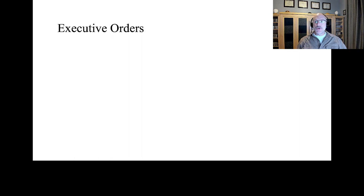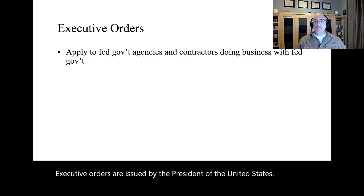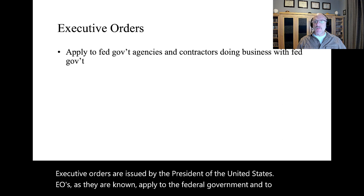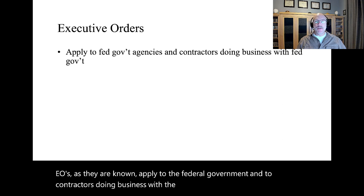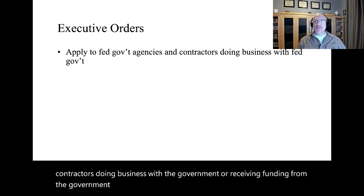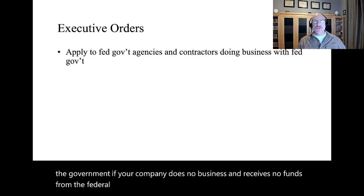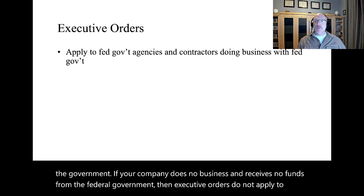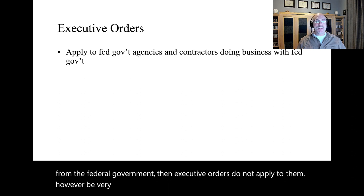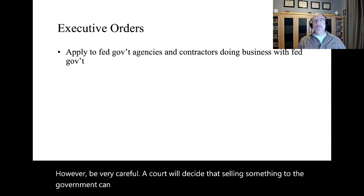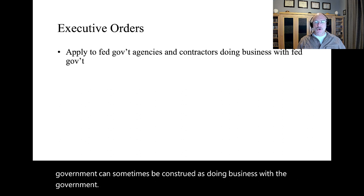Executive orders are issued by the President of the United States. EOs apply to the federal government and to contractors doing business with or receiving funding from the government. If your company does no business and receives no funds from the federal government, then executive orders do not apply to them. However, be very careful — a court will decide that selling something to the government can sometimes be construed as doing business with the government, so you should probably consult an attorney.